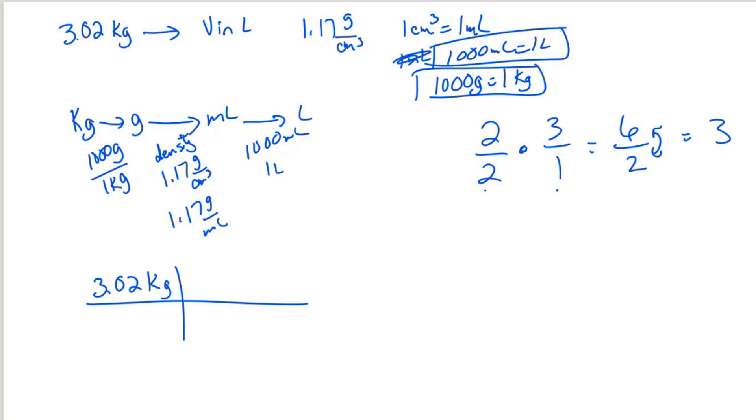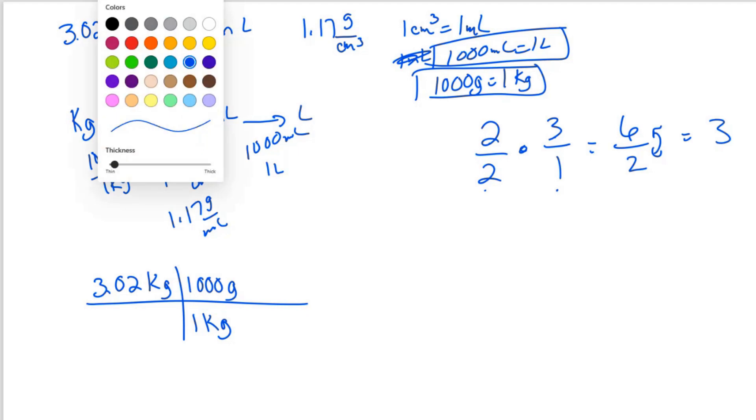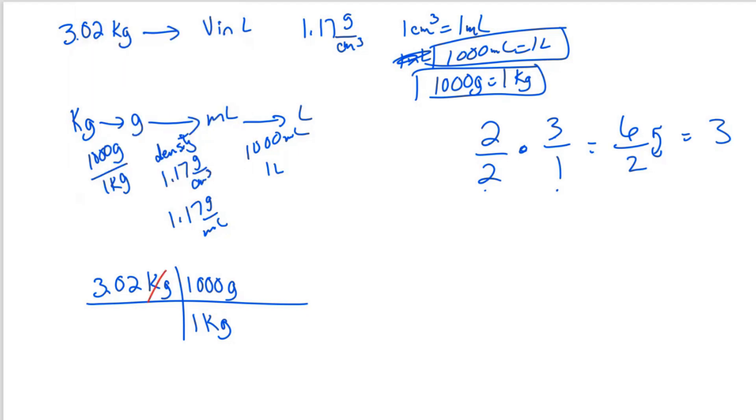So I'm going to convert kilograms to grams. I need to put the thing that I want to cross out on the bottom. So 1 kilogram is 1,000 grams. Now kilograms cancels, and my units are now grams.